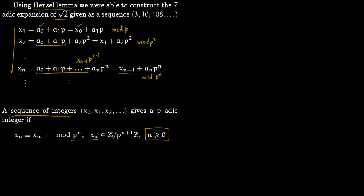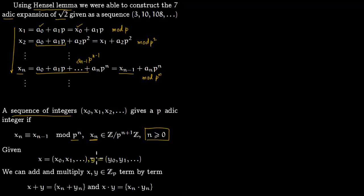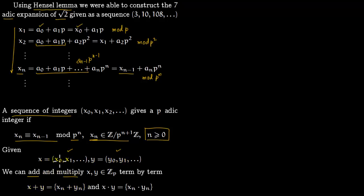Now say you have two p-adic integers x and y, meaning they have sequences satisfying this rule. Addition and multiplication are defined term by term. So x plus y has first term x₀ plus y₀, second term x₁ plus y₁, and so on. Similarly, x times y has first term x₀·y₀, then x₁·y₁, and the (n+1)-th term is xₙ·yₙ, since we start indexing from zero.